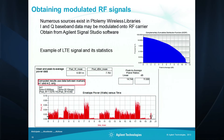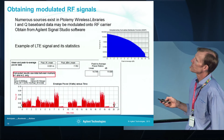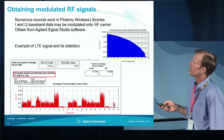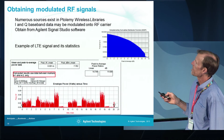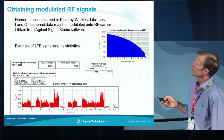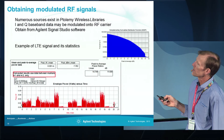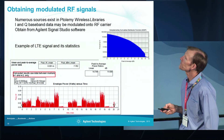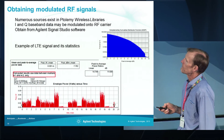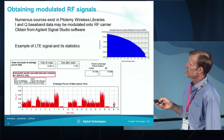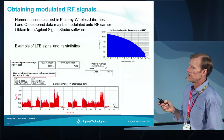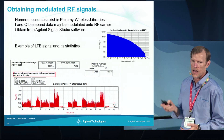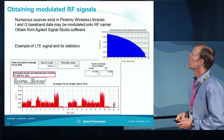We're able to look at the statistics of the modulated signals we're using, including peak-to-average power ratios shown in a CCDF curve. We can use signals from Ptolemy wireless libraries, IQ baseband data, signals from Agilent Signal Studio software, or time-domain data in a text file for simulations.